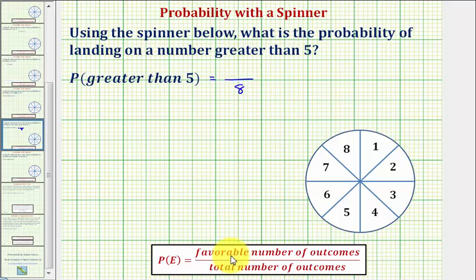And now we'll determine the favorable number of outcomes, which would be the numbers greater than five. Remember, five is not greater than five, so the first favorable outcome would be six, as well as seven, and eight.